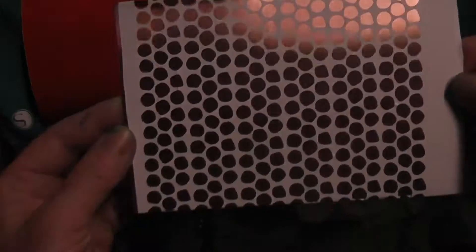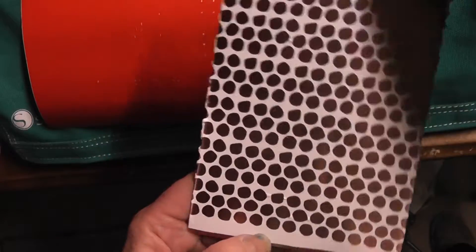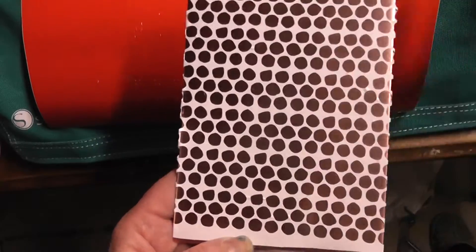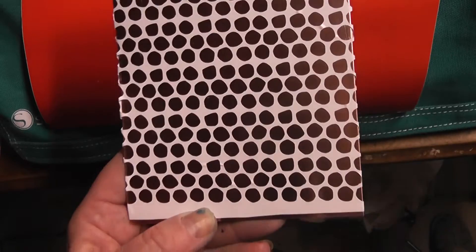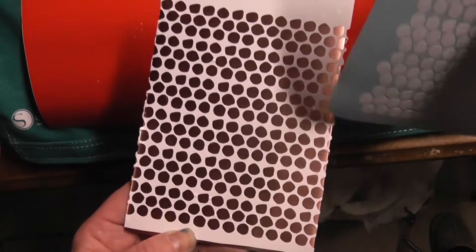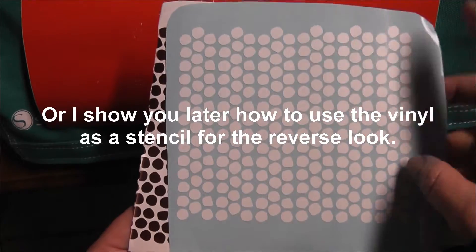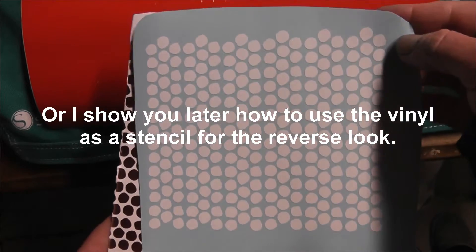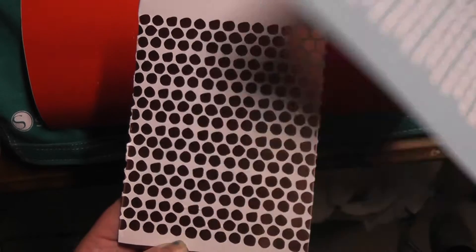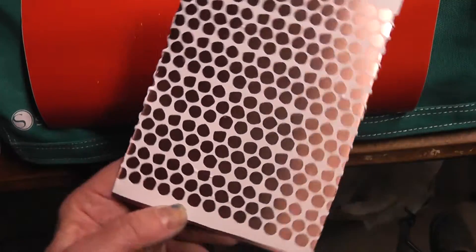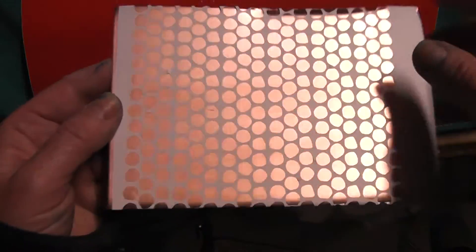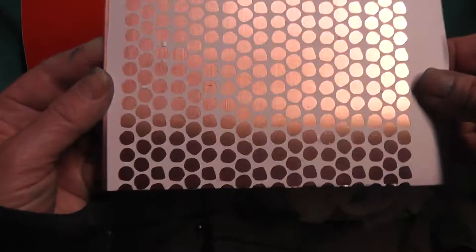So here is the vinyl applied. I used the full sheet. I could also use the reverse, I mean it would be tedious, but I could take these dots and apply them to another sheet of copper to get the reverse effect. But for this one, wherever you see that copper, that's what's going to be etched.